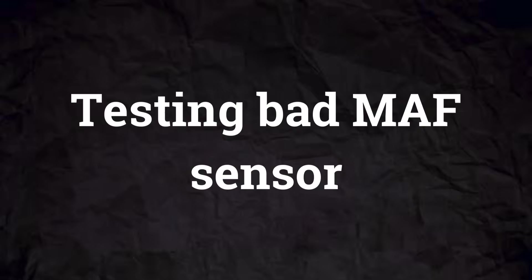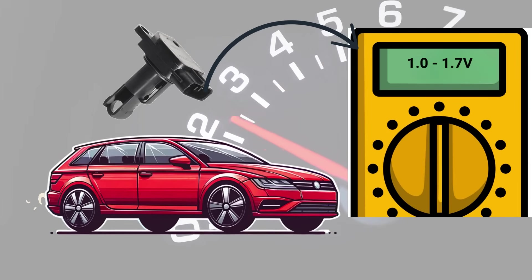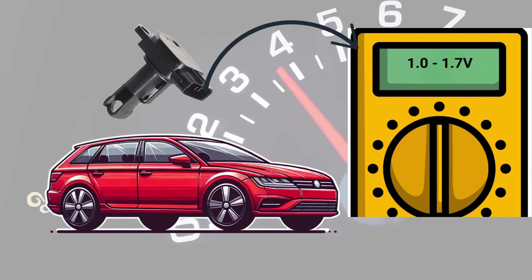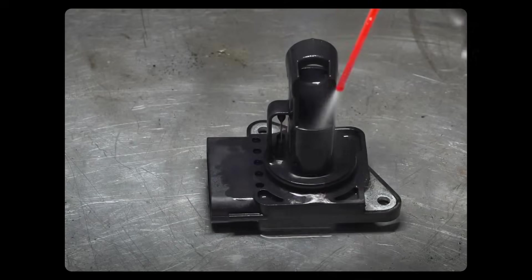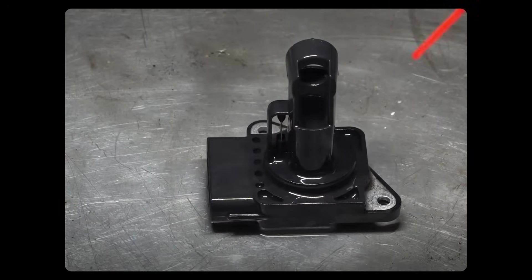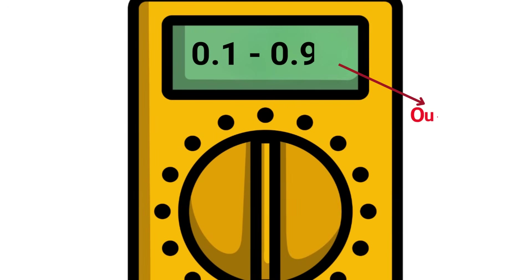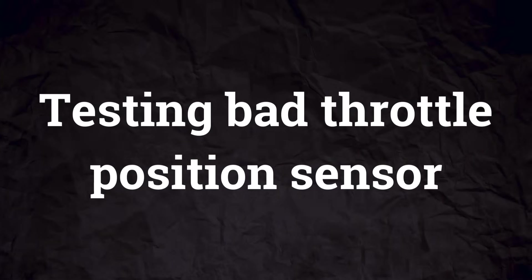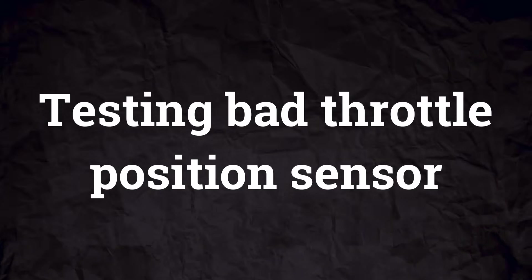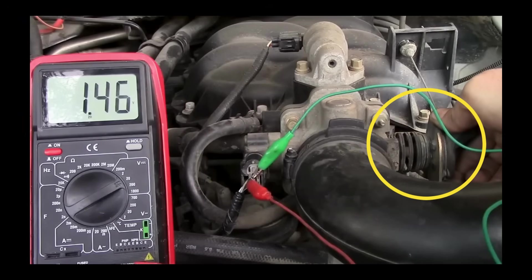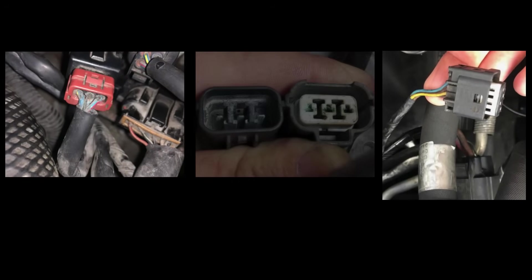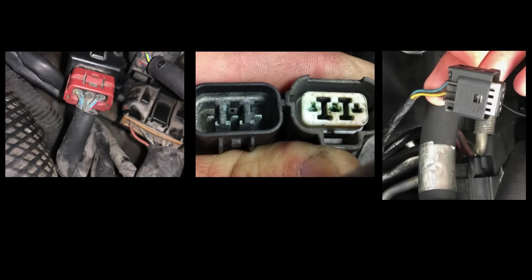To test the MAF sensor, use a multimeter and verify the output voltage increases from 1 volt to 1.7 volts when you increase engine RPM; you can also try cleaning it with brake cleaner. To test an oxygen sensor, check if its output voltage goes outside the range of 0.1 to 0.9 volts. To test the throttle position sensor, its voltage should change smoothly as you open and close the throttle. Also check for corrosion or loose connections on harness connectors for all those sensors.